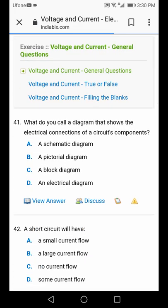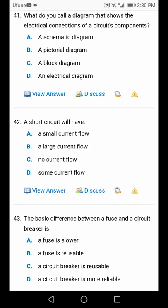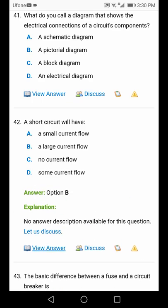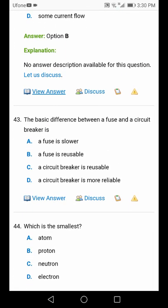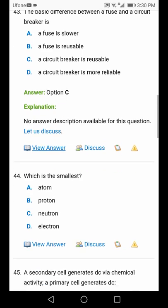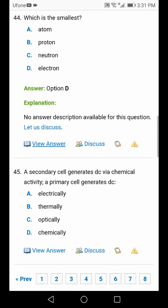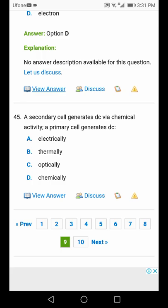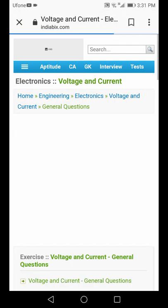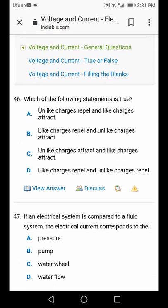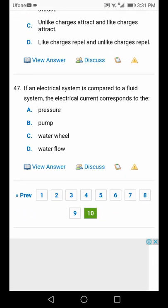Page number 9: What do you call a diagram that shows electrical connections? Schematic diagram. Short circuit will have large current. Difference between fuse and circuit breaker: fuse is not reusable, circuit breaker is reusable. What is the smallest particle? Electron. Secondary cell generates DC via chemical activity. If an electrical system is compared to fluid, electrical current will be water flow, option D.